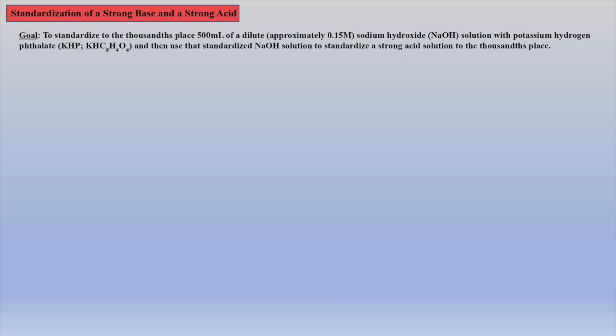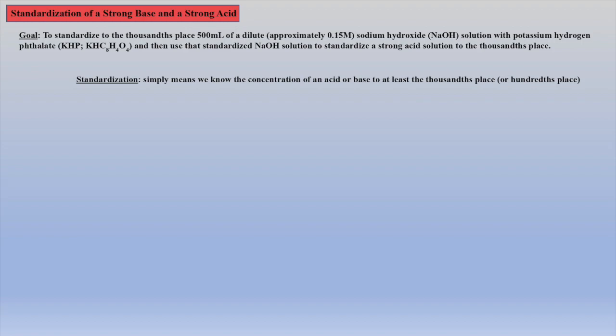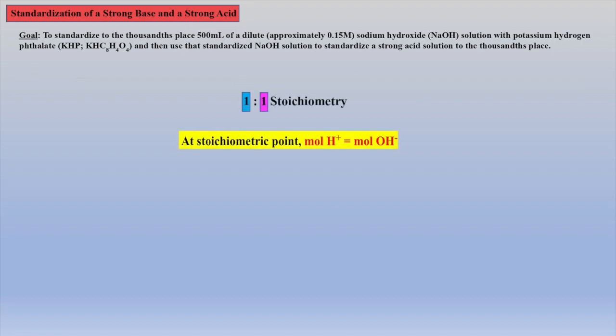The next skill we will examine with acid-base titrations is the technique to standardize a strong base with the aid of the solid monoprotic acid KHP. When an acid or base is standardized, it simply means we know its concentration to at least the thousandths place or more. Once a base is standardized, it can be used to titrate and standardize an acid. The key to this calculation will be the one-to-one stoichiometry of acid and base.